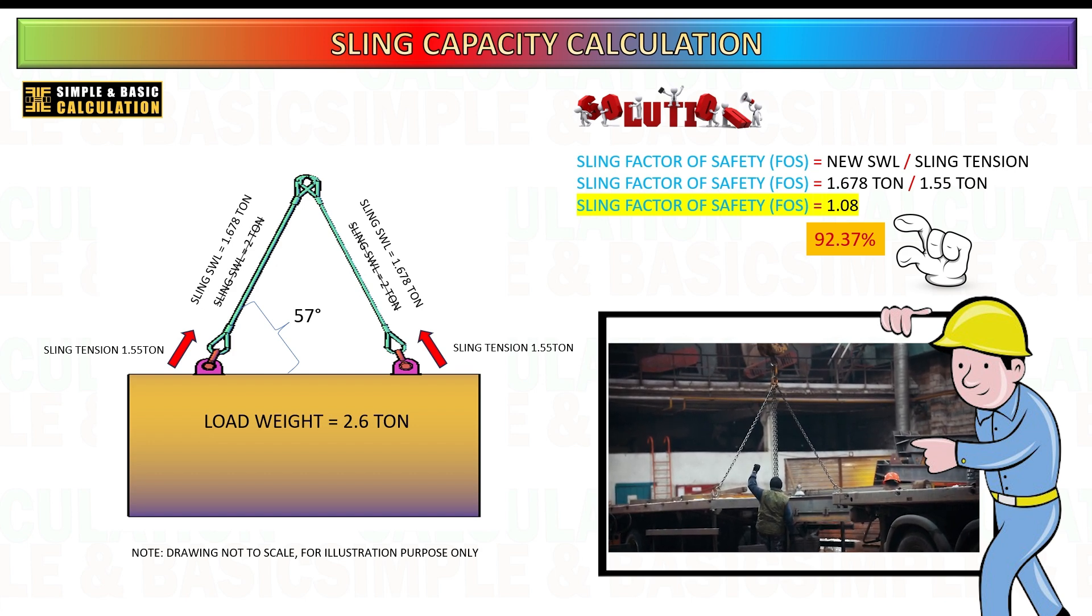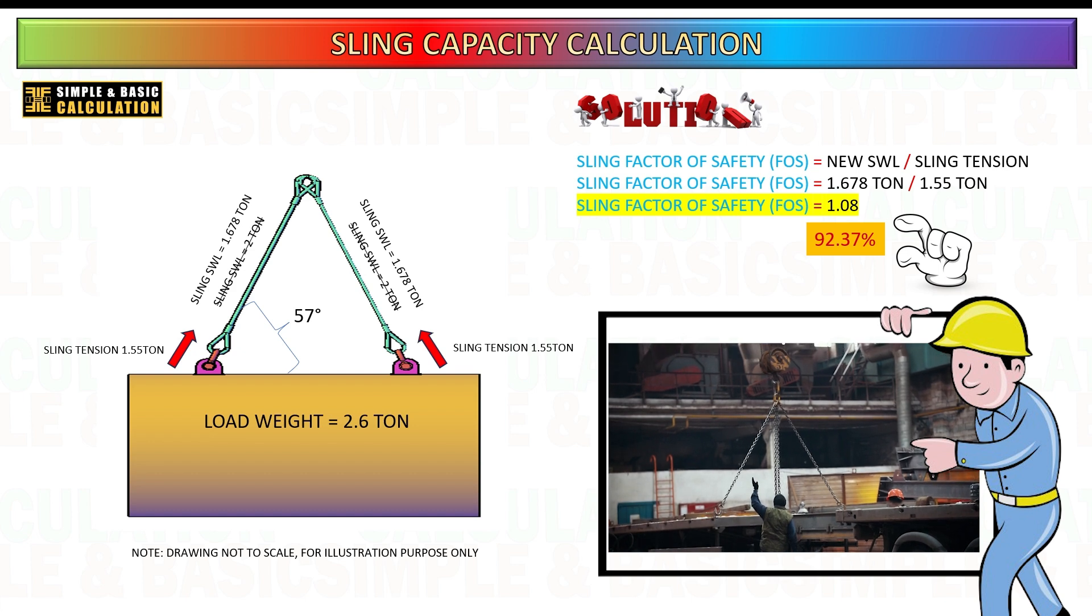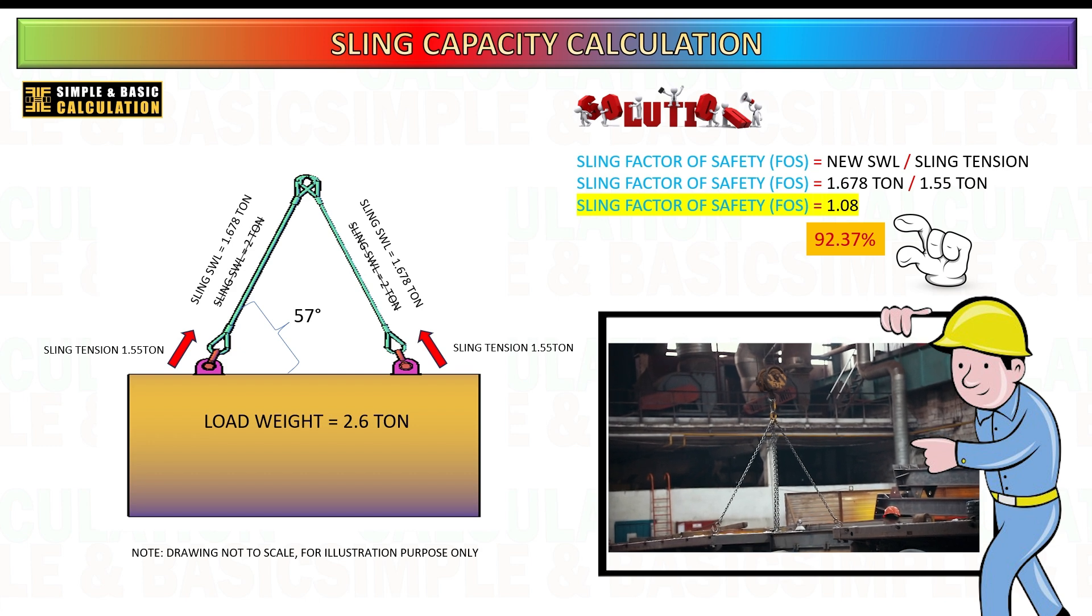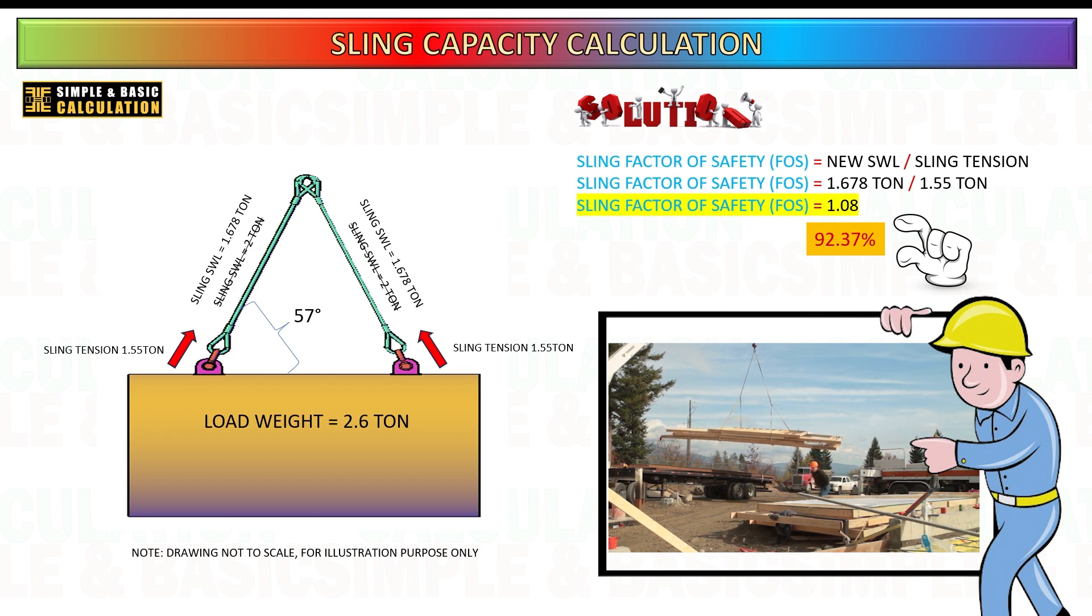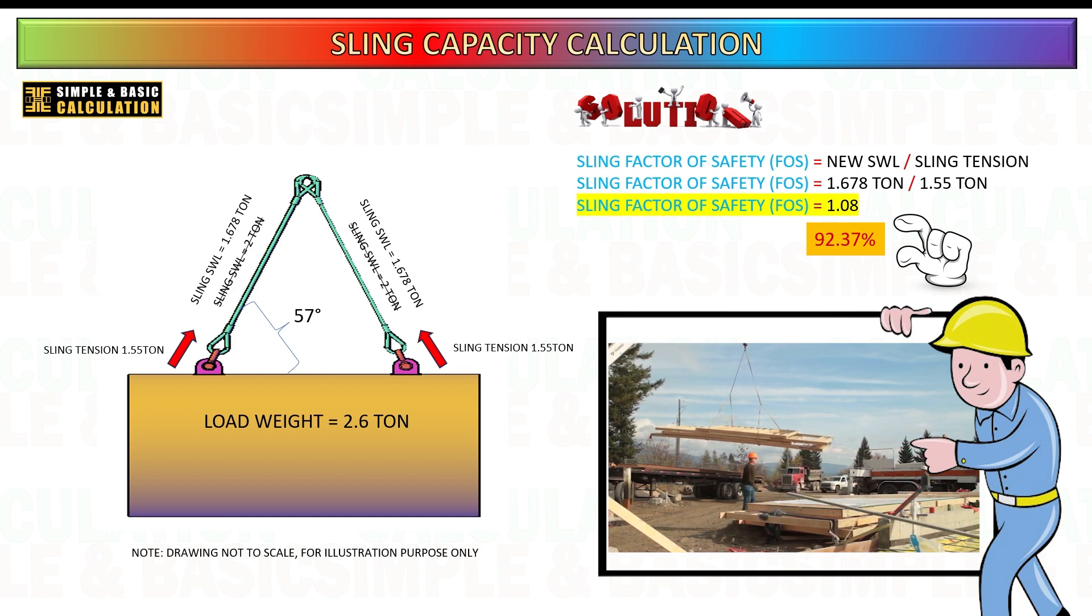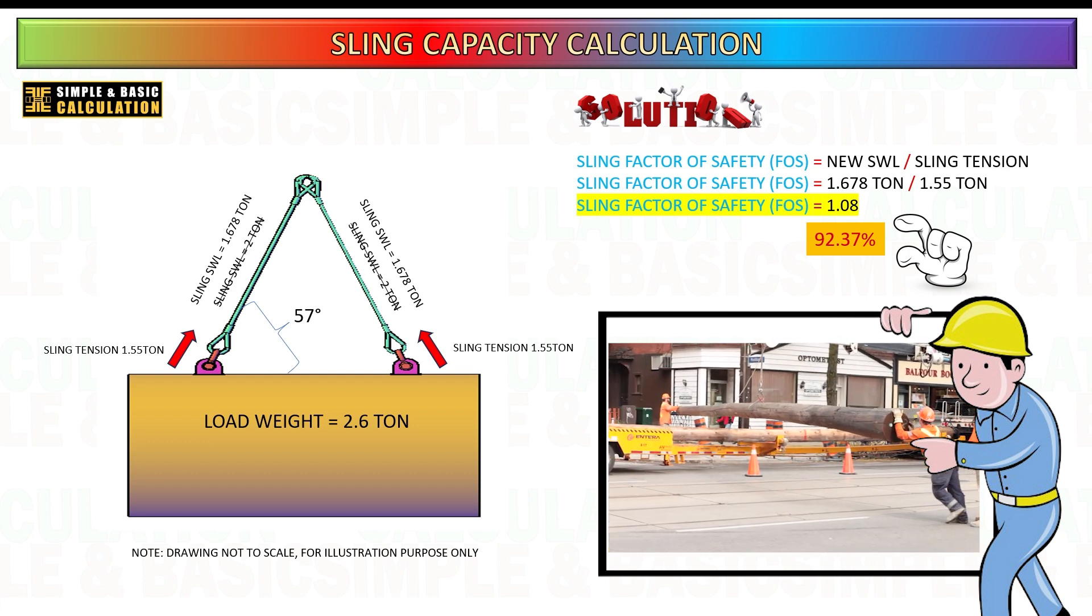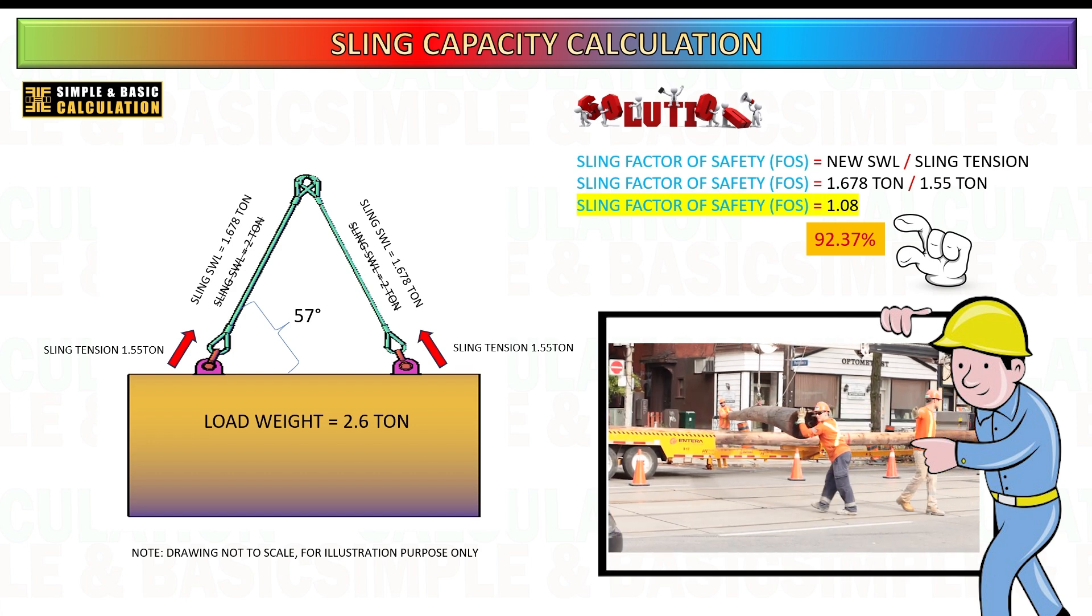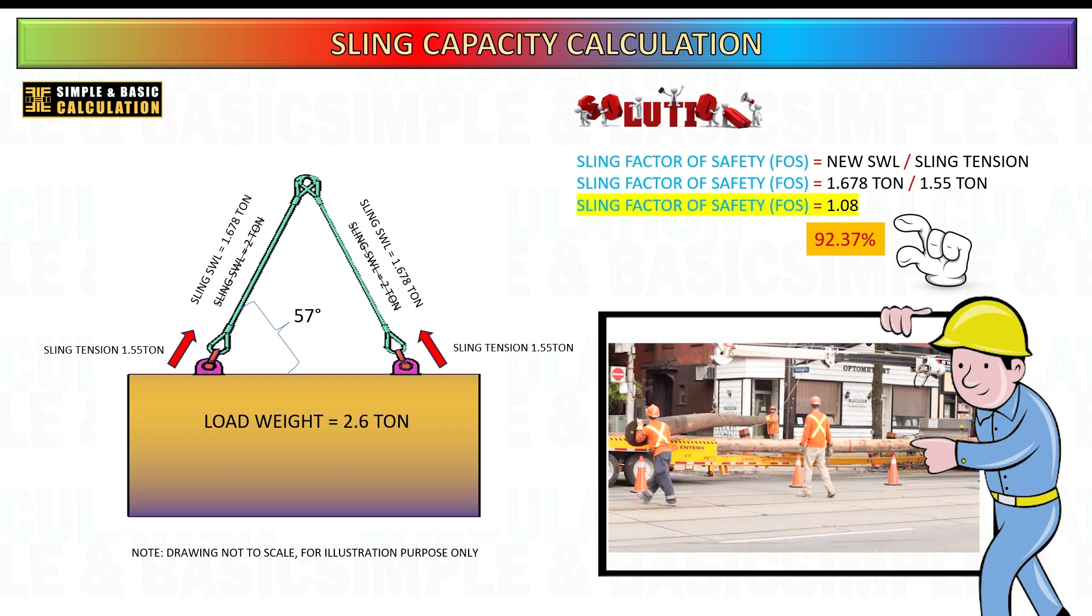Consideration of risk factors. Factors such as an unpredictable center of gravity, fluctuations in load weight, or environmental conditions that could affect the rigging setup should be considered. Allowing for a more significant margin of safety helps mitigate these risks and ensures that the sling remains reliable and safe under various conditions. By carefully calculating and considering the FOS and allowing for additional safety margins, you can ensure that the sling operates within safe limits, even in the face of uncertainties and potential variations in lifting conditions.